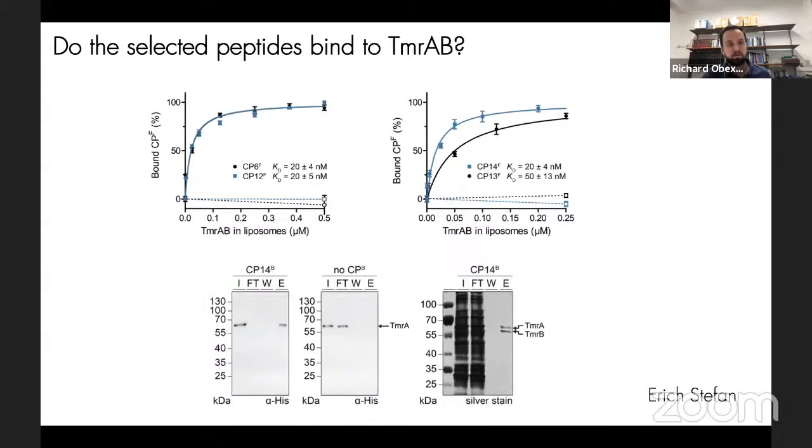Now we set out to characterize those peptides to figure out how or whether they are inhibitors of the TMRAB ABC transporter. However, first of all, we needed to figure out if these peptides are binding. Eric in Robert Tampe's lab measured fluorescence anisotropy of TMRAB mobilized in liposomes. He discovered that these new peptides had KD values of around 20 to 50 nanomolar. These peptides could also be used to selectively and quantitatively pull down TMRAB out of purified samples, but they could also selectively isolate TMRAB complexes from cell lysates.